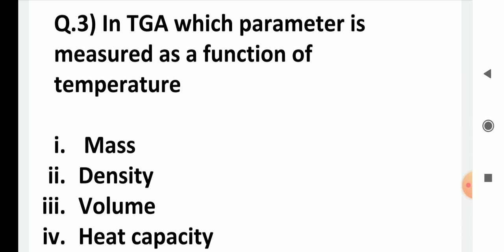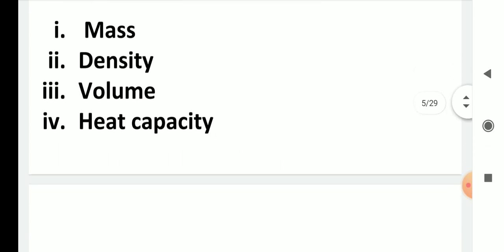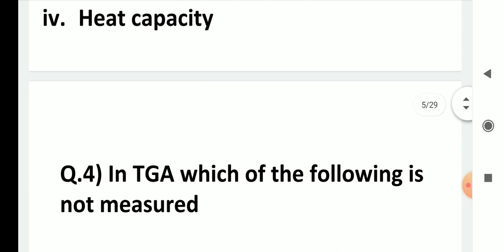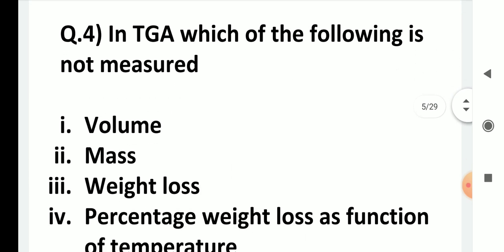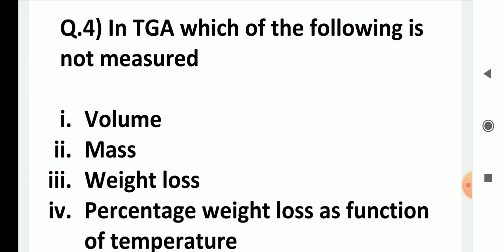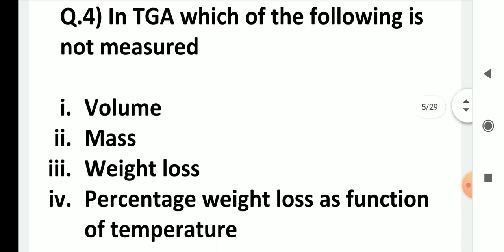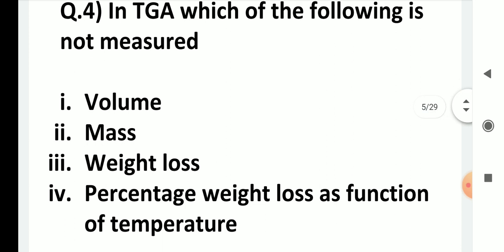In TGA, which parameter is measured as a function of temperature? The choices are mass, density, volume, and heat capacity. It is thermogravimetric analysis, so mass is measured. The correct answer is the first one.